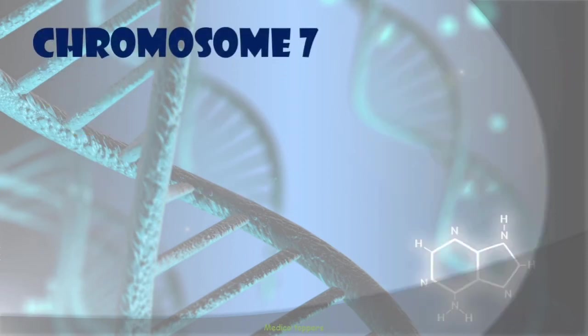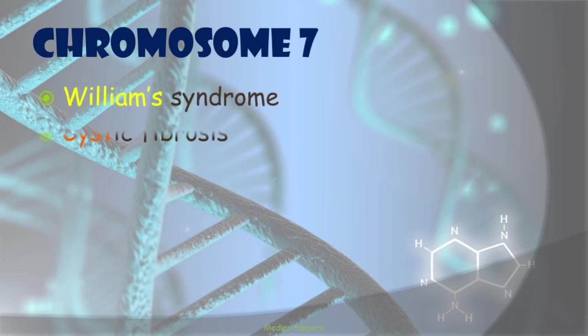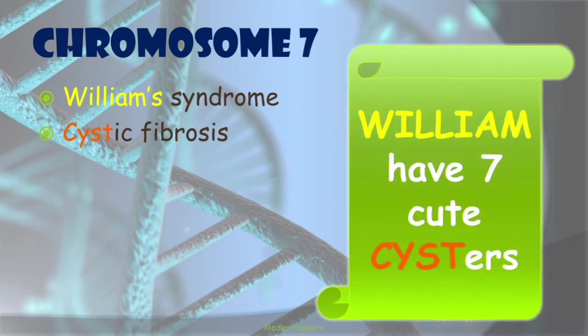Then comes chromosome 7, associated with Williams syndrome and cystic fibrosis. This is one of the favorite mnemonics: 'William has 7 cute sisters.' So 'William' is for Williams syndrome and 'sisters' is for cystic fibrosis.